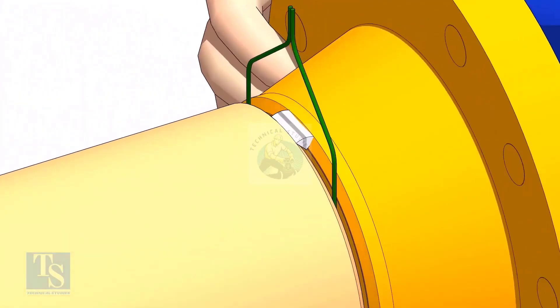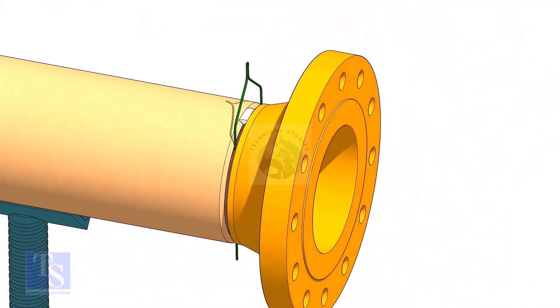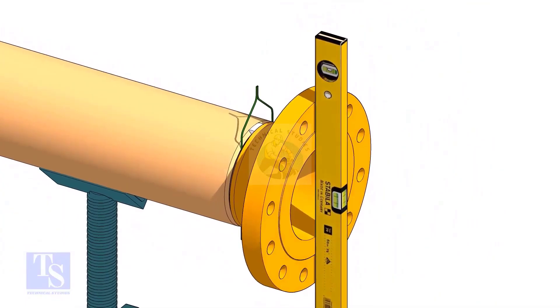Tack weld on the top side of the joint. Check the level of the flange vertically and tack weld on the bottom side of the joint.